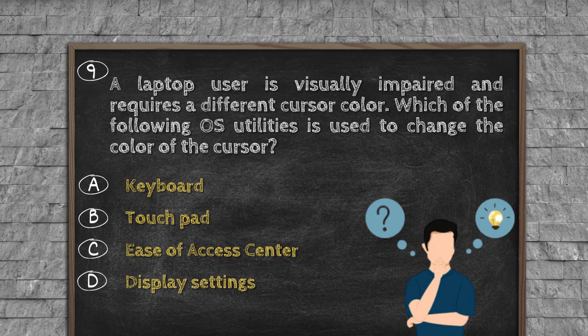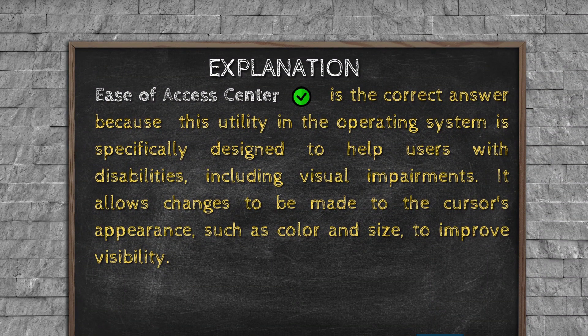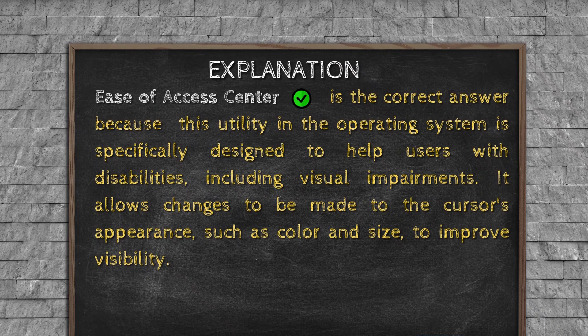Question number nine. A laptop user is visually impaired and requires a different cursor color. Which of the following OS utilities is used to change the color of the cursor? Option A, keyboard. Option B, touchpad. Option C, Ease of Access Center. Option D, display settings. Explanation. Ease of Access Center is the correct answer because this utility in the operating system is specifically designed to help users with disabilities, including visual impairments. It allows changes to be made to the cursor's appearance, such as color and size, to improve visibility.